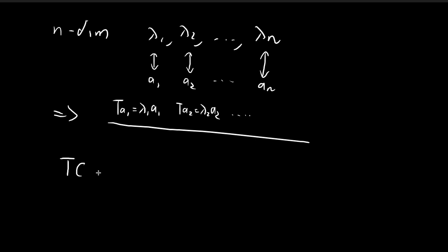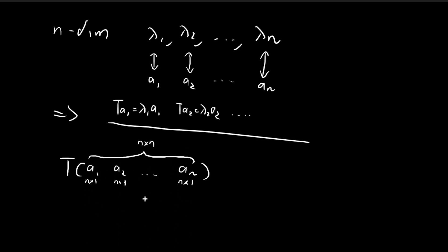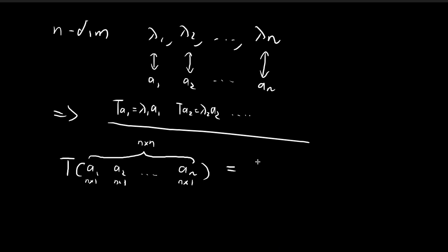I'm going to put T multiplied by [a₁, a₂, ... aₙ]. Each of these a₁ through aₙ are n-by-1 column matrices, so combining them gives an n-by-n square matrix. This equals the right-hand side: λ₁a₁, λ₂a₂, all the way to λₙaₙ — which is also an n-by-n matrix.